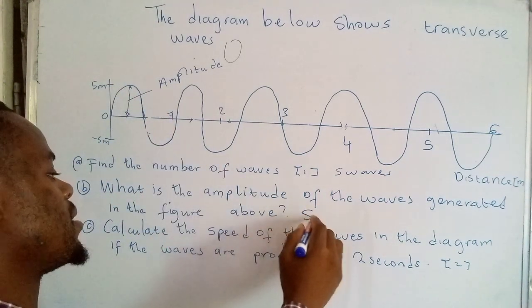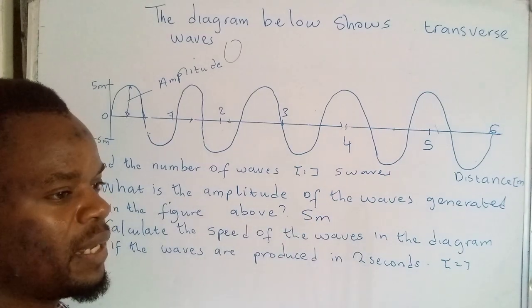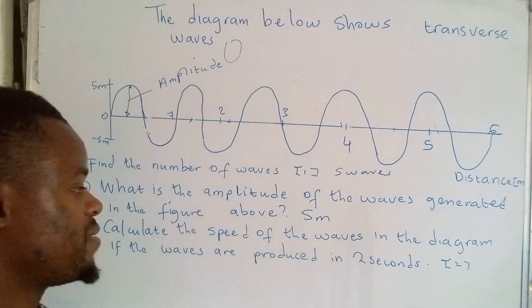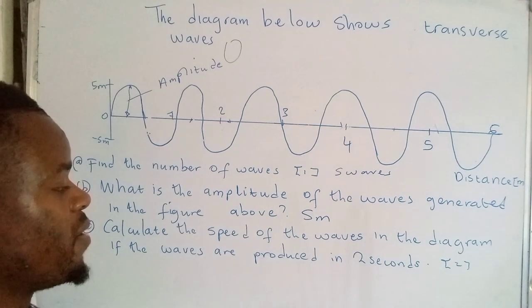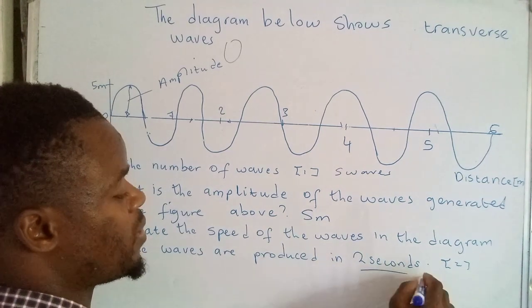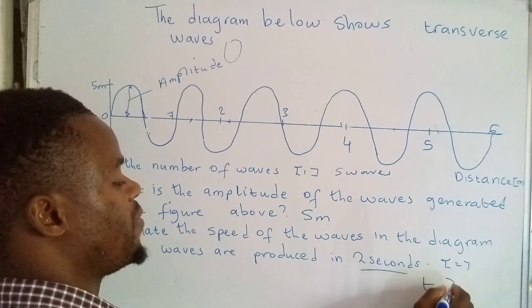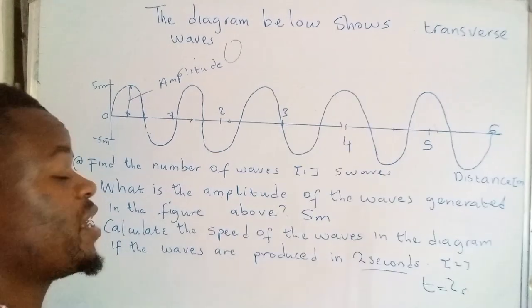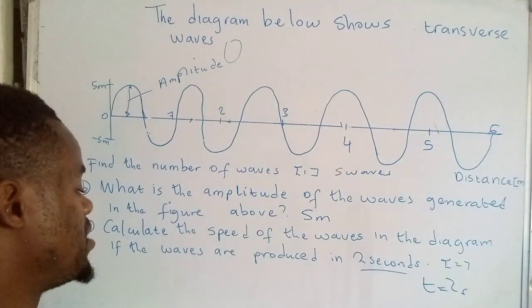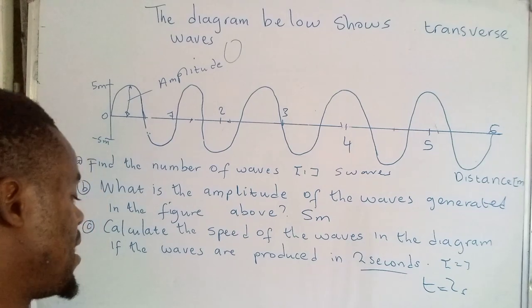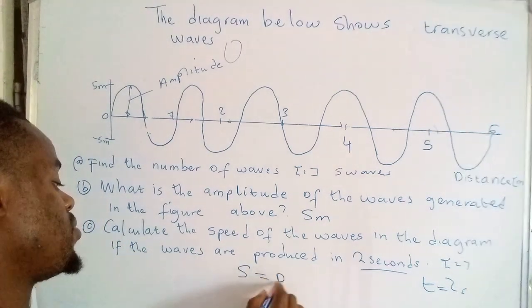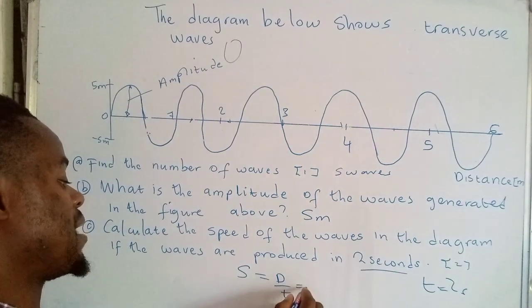Let's check out the last question: calculate the speed of the waves in the diagram if the waves are produced in two seconds. So what we've been given is time which is equal to two seconds. Now we can make use of the basic equation of classical mechanics to determine the speed. It says speed is equal to total distance over total time taken.